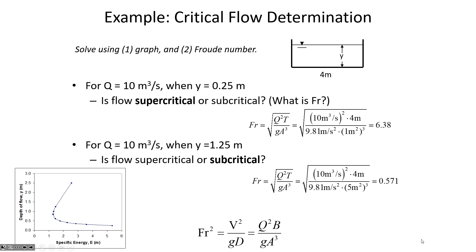The first depth, 0.25 meters, has a Froude number greater than 1 - that confirms the same conclusion from the specific energy diagram: 0.25 m is below the critical depth, so it's supercritical flow. For the depth of 1.25 meters, that's greater than the critical depth of 0.86, leading us to conclude subcritical flow conditions, and the Froude number is confirmed as less than 1. Both methods agree.